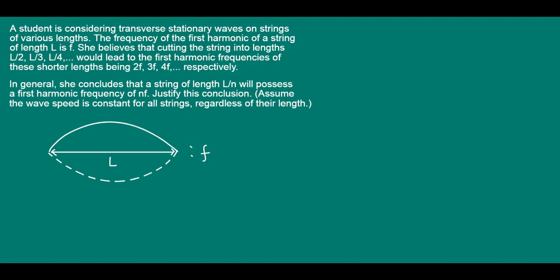We're also told that shorter lengths of string, a half, a third, a quarter of the original length, will have first harmonic frequencies of 2f, 3f, 4f, and so on. In general, the student believes a string of length L over n will have a first harmonic frequency of nf, which is what we have to try and justify or prove.